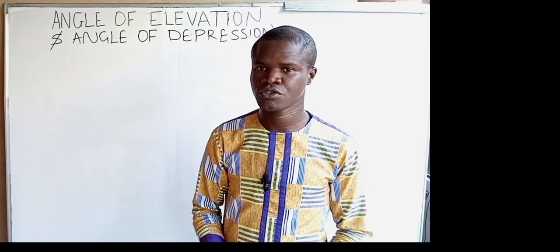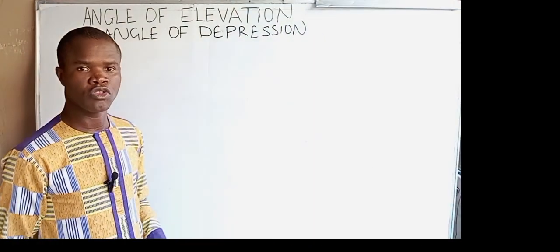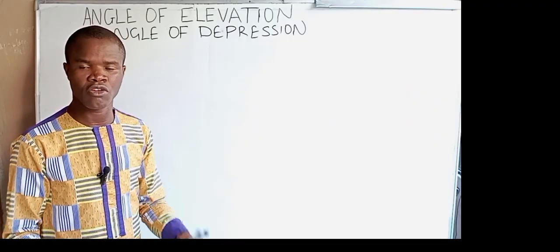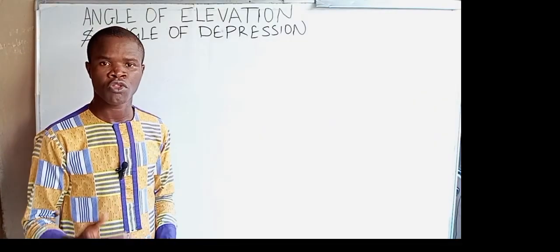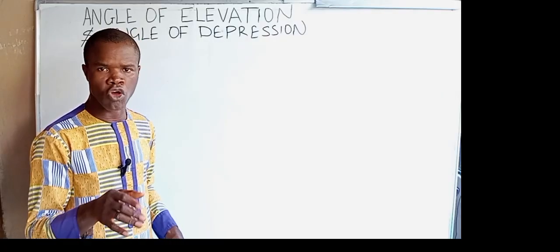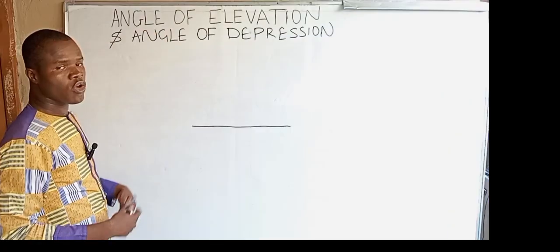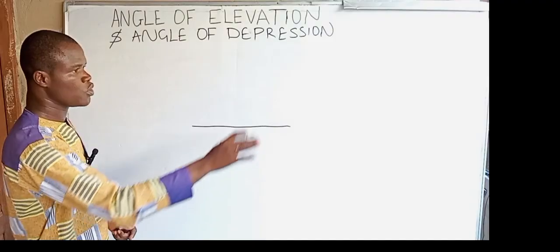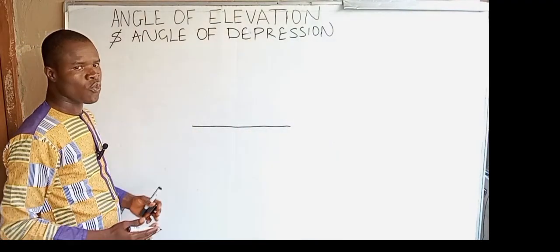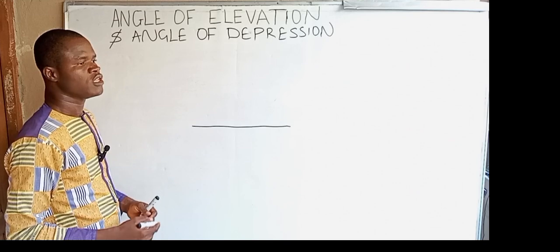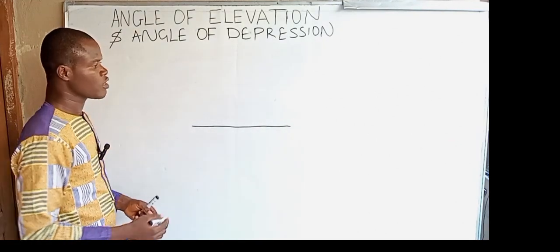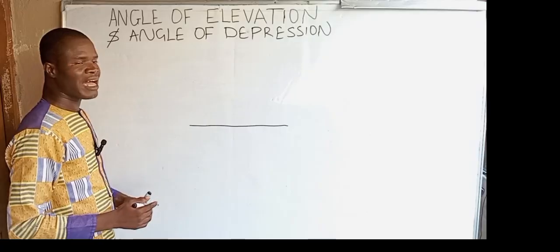First of all, for you to understand the meaning of angle of elevation and angle of depression, you must first understand what we mean by 'normal'. When we walk on the street, we look forward. The direction of our sight while we walk is what we are going to be referring to as the normal.